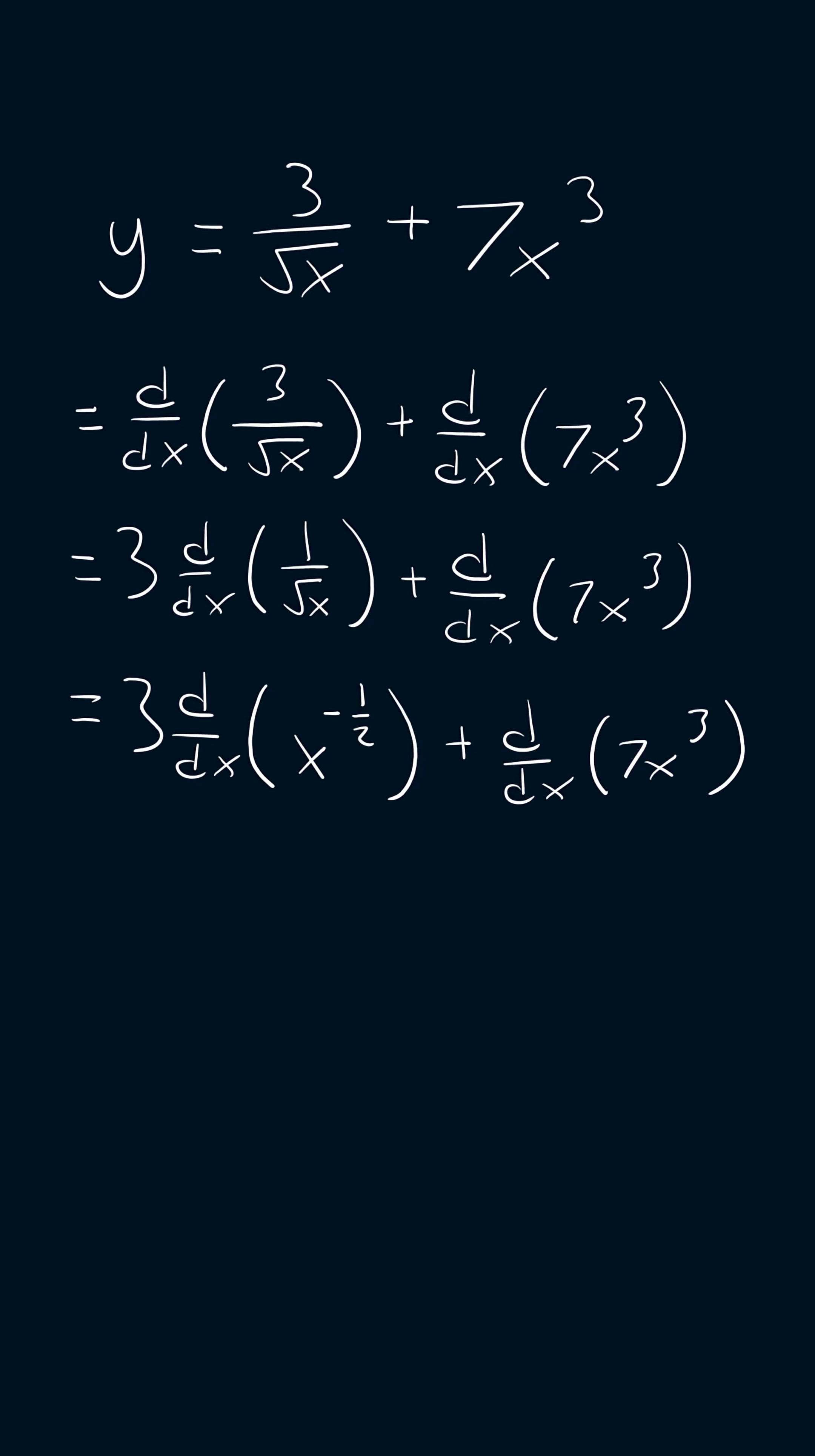Now I can apply the power rule. Applying the power rule, we will get 3 times negative 1 half x to the power of negative 1 half minus 1 plus the derivative of 7x cubed.